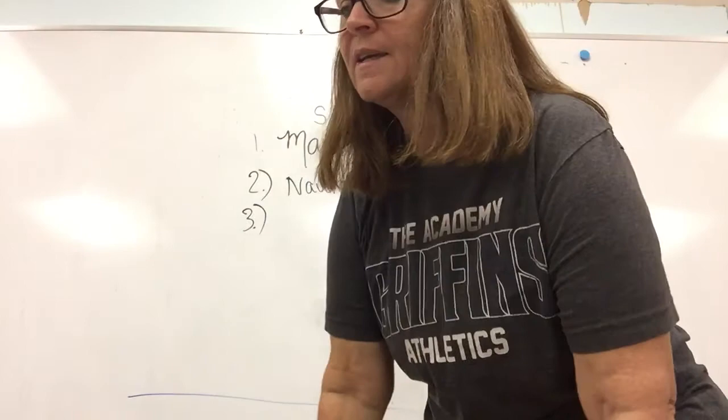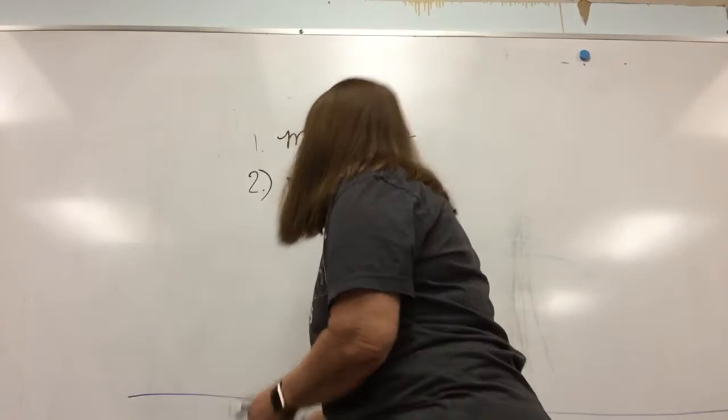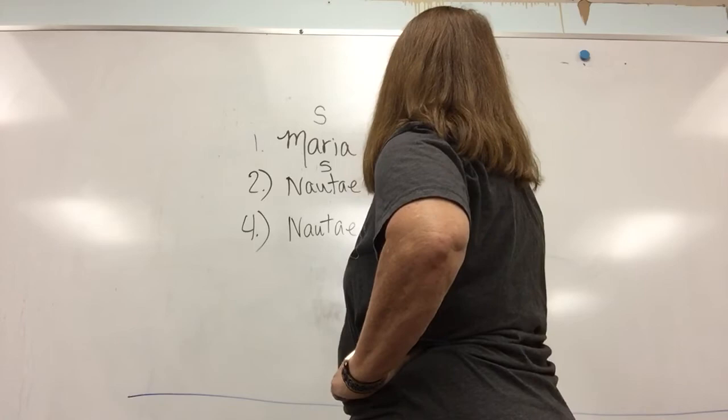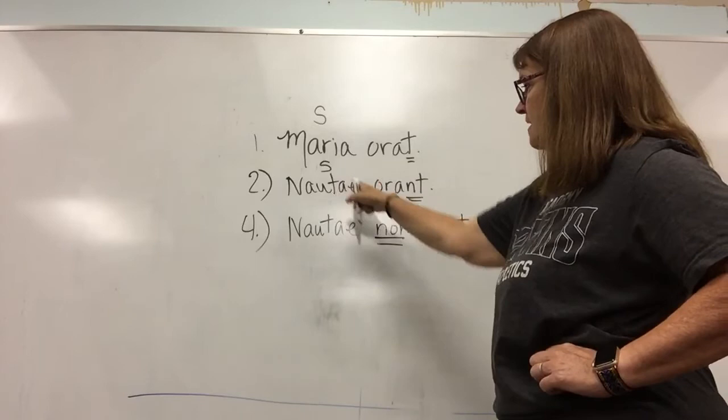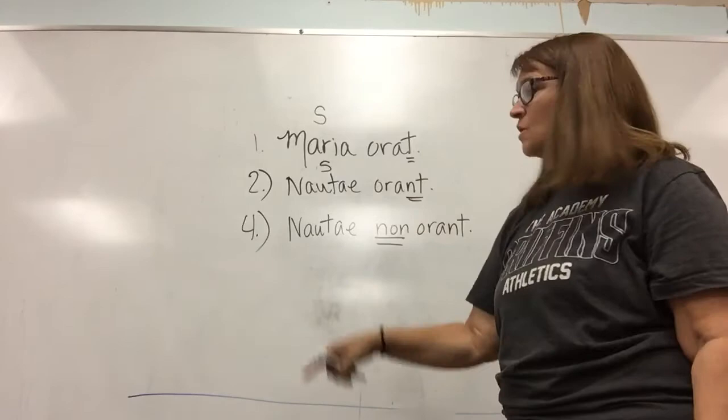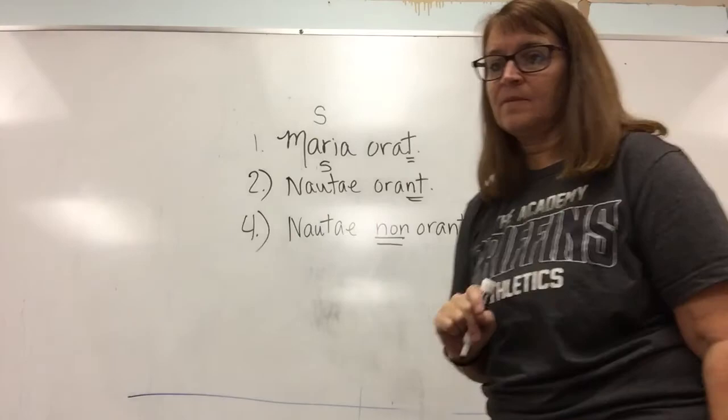Let's do number four, because this adds something new. So we have nautae non orant. You've just added an adverb here — the same sentence as before, only now you have 'non.' The sailors do not pray. You can't really say 'sailors pray not,' so you have to add the helping verb 'do.' The sailors do not pray.